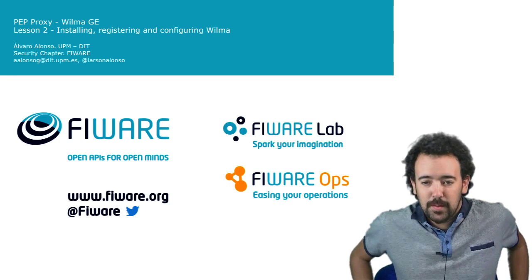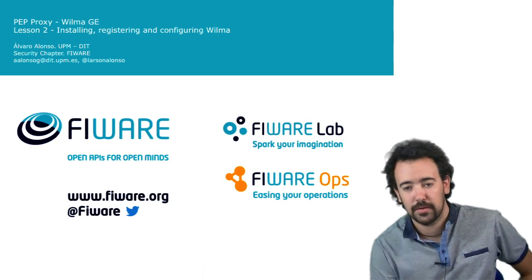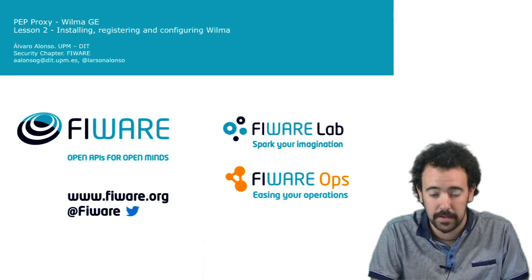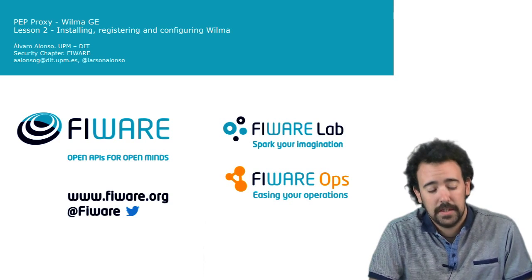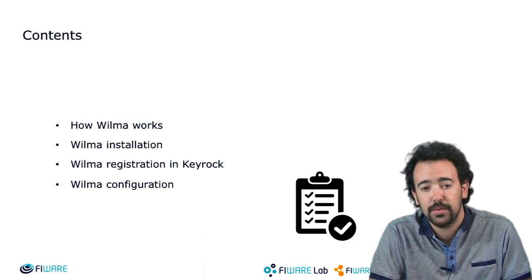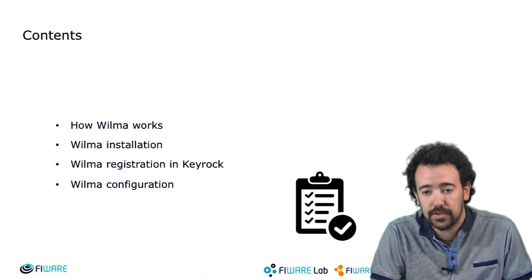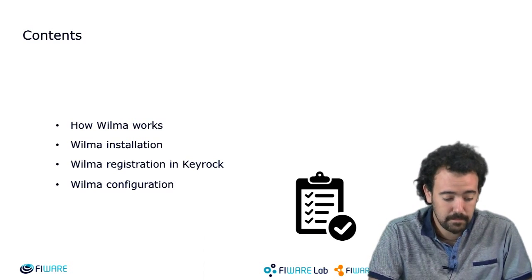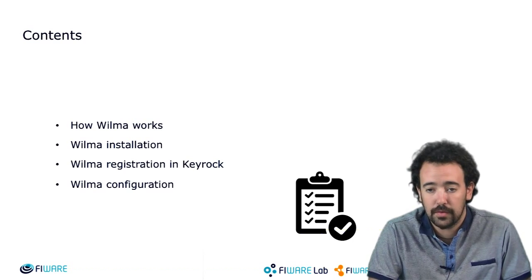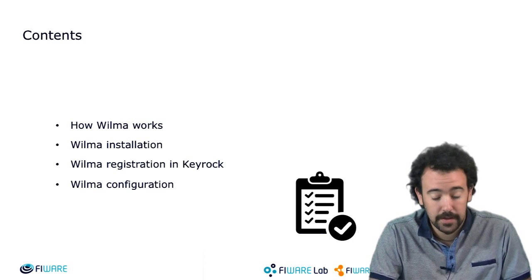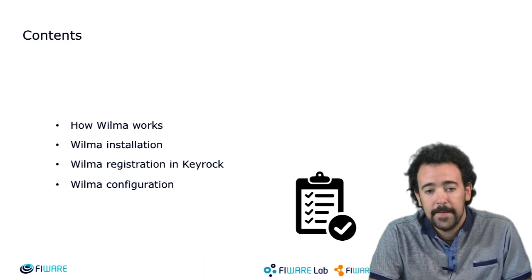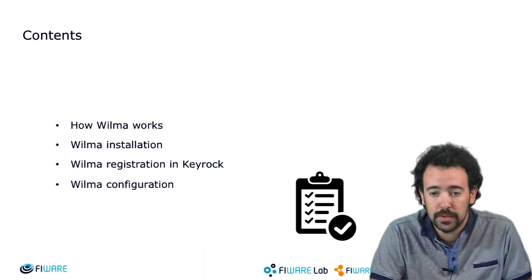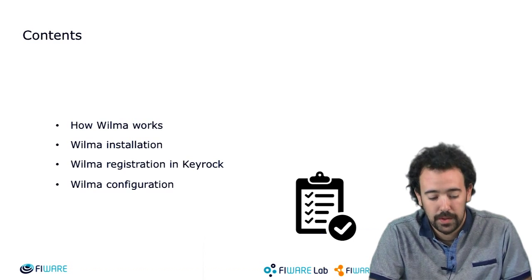Hi, how are you? Welcome to this FIWARE Academy course in the scope of the security chapter and regarding PEP Proxy Wilma Generic Enabler. This is the second lesson of this course in which I will explain in more detail than in the previous lesson how the Wilma Generic Enabler works. I will also show you how to install this component in your own computer, how to register it in Keyrock in the FIWARE IDM portal, and how to configure the basic parameters that you need in order to start playing with this component.